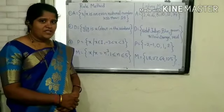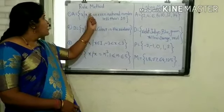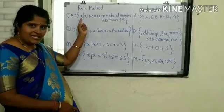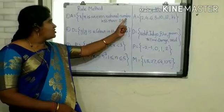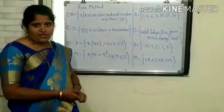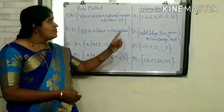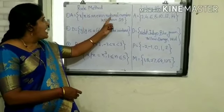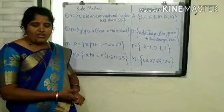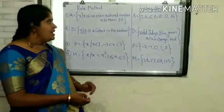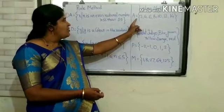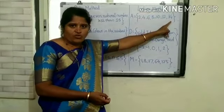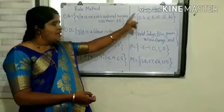Let us see some more examples according to the rule method. The first example: A = {X | X is an even natural number less than 15}. We are going to write the same set by the listing method. The variable is X, and the property is even natural numbers less than 15. So: A = {2, 4, 6, 8, 10, 12, 14}.